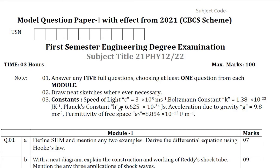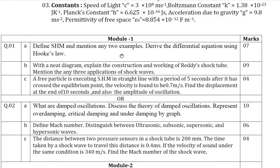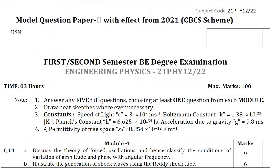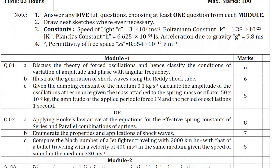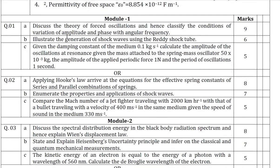Module one is named oscillations and waves. The questions here include equations, problems from this topic, definitions of oscillations, damped oscillations, and waves. This is an example of how questions will be framed for your examination. You can also refer to set two, paper two, model question paper two — module one has question number one and two. Definitely, problems will be there from each module.